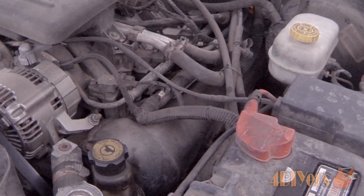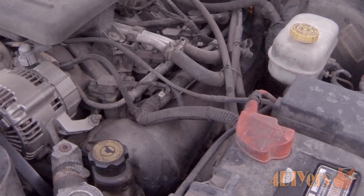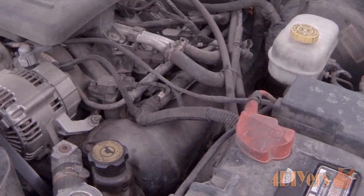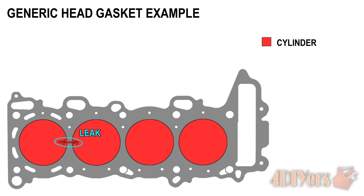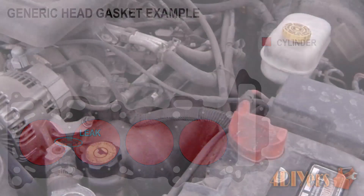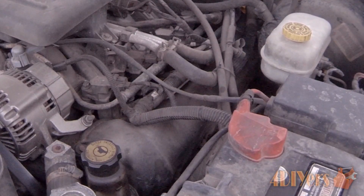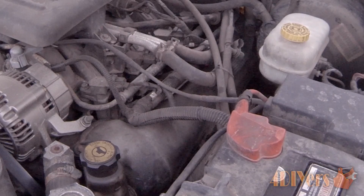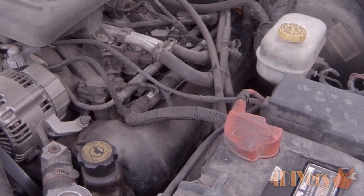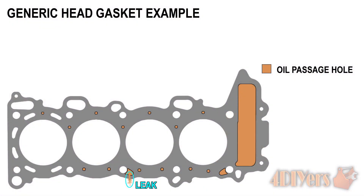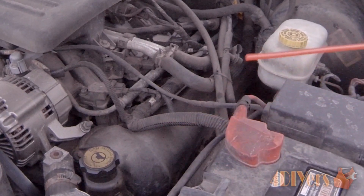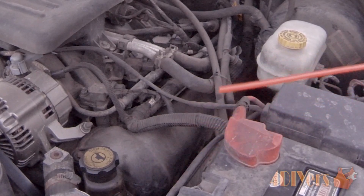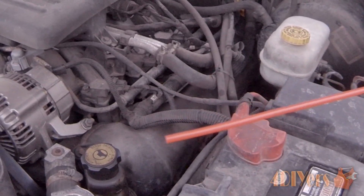A couple of ways a faulty head gasket can present without coolant leaking: one is leakage between cylinders, which can cause the vehicle to run erratically with idling problems. Another is that an oil supply or return hole through the head gasket can leak to the exterior of the engine, causing your oil level to continuously go down depending on the severity of the leak.